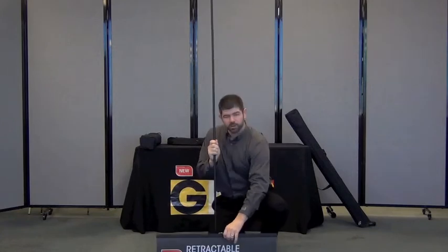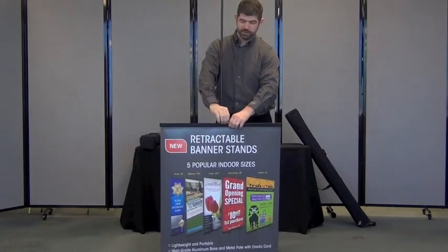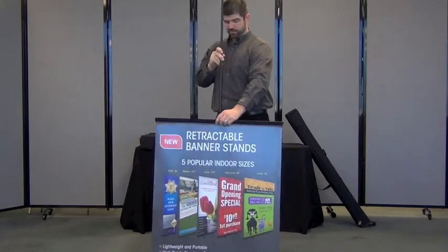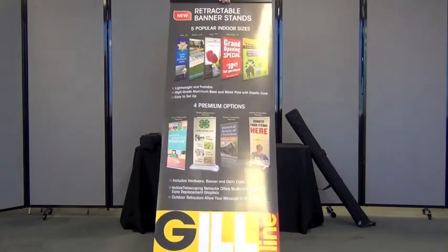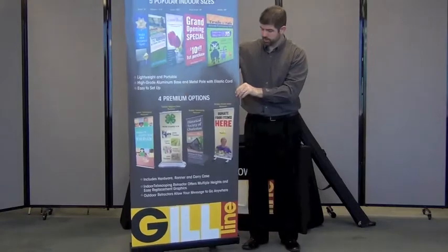You can grab the banner rail here at the top and slowly pull it up. There's a hook on the top of the unit that's going to hook into the pole here at the top. If you have a problem reaching, what you can do is just lean it back, hook it on the top of the pole, and there you have it.